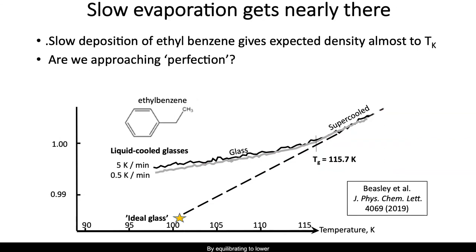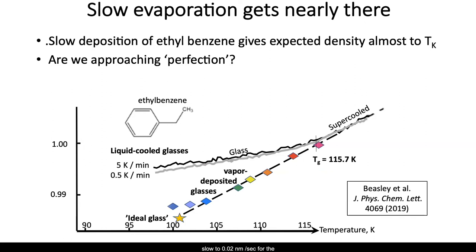By equilibrating to a low temperature, we can find out. Slow cooling doesn't get you very far. Vapor deposition gets further. Here's data for vapor-deposited ethyl benzene. The deposition rate has to slow considerably — to 0.02 nanometers per second — for the lowest temperatures. Doing that, one can get within a few percent of Tk and about a tenth of a percent from the expected density there. Is this a perfect glass, and how would we know?